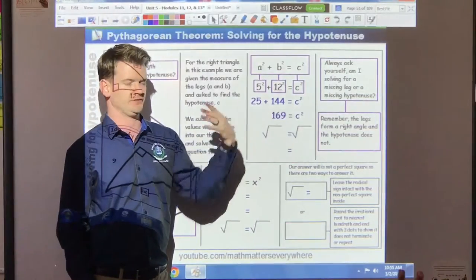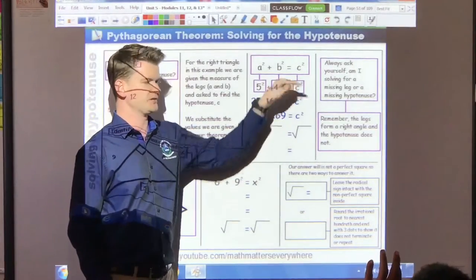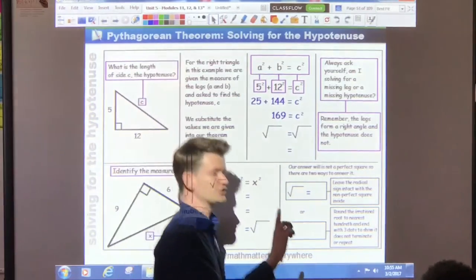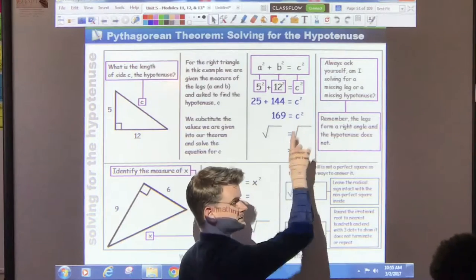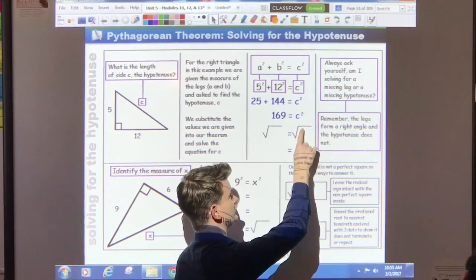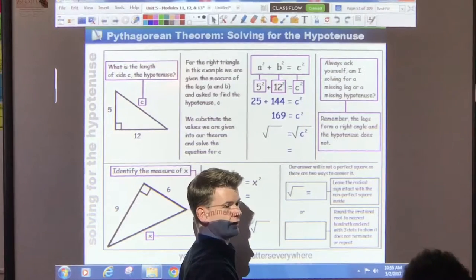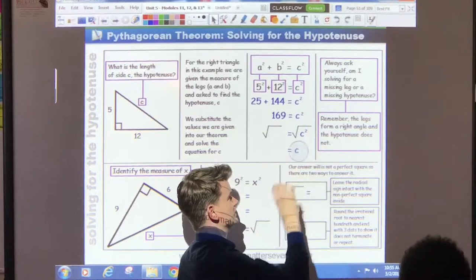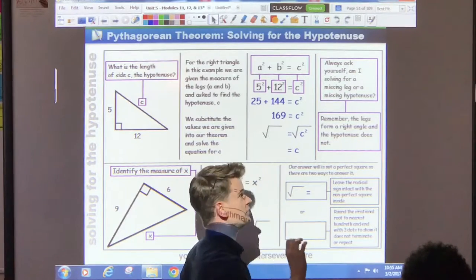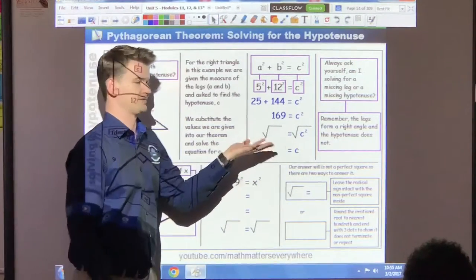So, we have to get rid of the exponent. Let's see if you remember the answer to this question. The opposite of squaring something is taking the square root. So, we have to take the square root of this. But remember, what you do on one side, you must do on the other side. So, over here, if we take the square root of C squared, we end up with just C.